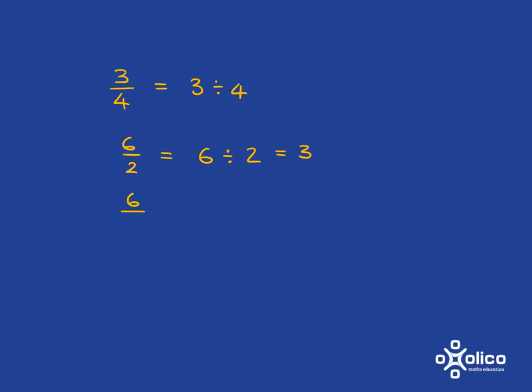We can talk about, say for example, 6 over a half. Now that looks quite difficult to work out, but if we simply rewrite it as a division, we've got 6 divided by a half, which is 6 multiplied by 2 over 1, which is equal to 12.